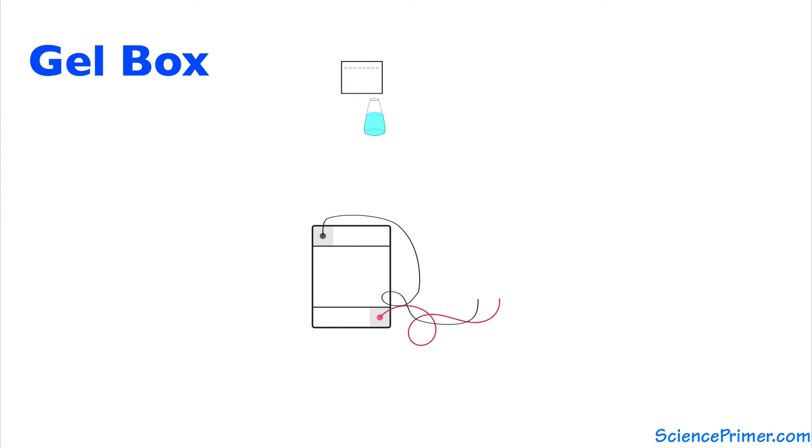A gel box is the container that holds the gel submerged in running buffer. It is designed so that when current is applied through the attached electrodes, the current flows through the gel, creating the electrical field needed to push the negatively charged DNA molecule towards the positive electrode.